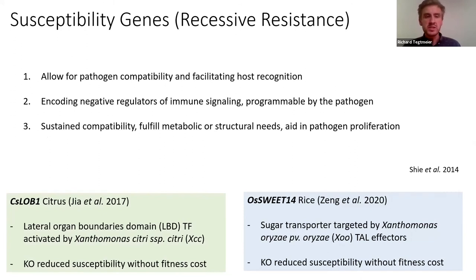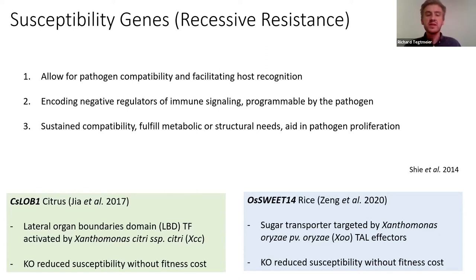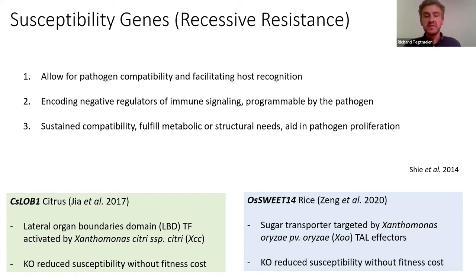This is where susceptibility genes as a breeding target can fill in some of those gaps. We classify this as recessive resistance, described better as a loss-of-function mutation. It's a broad set of targets — anything that allows for pathogen compatibility, facilitating host systems going from host to non-host, encoding negative regulators of immune signaling that the pathogen can leverage, or sustained compatibility such as a sugar transporter hijacked by the pathogen and left in an active conformation.